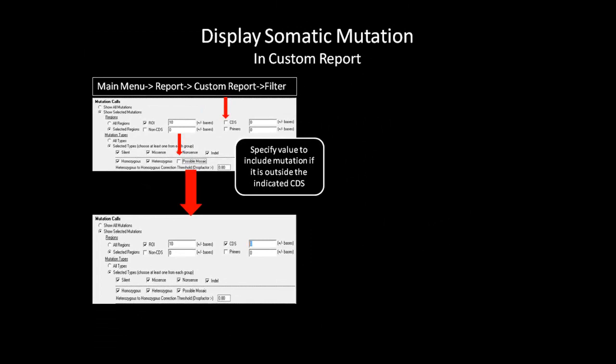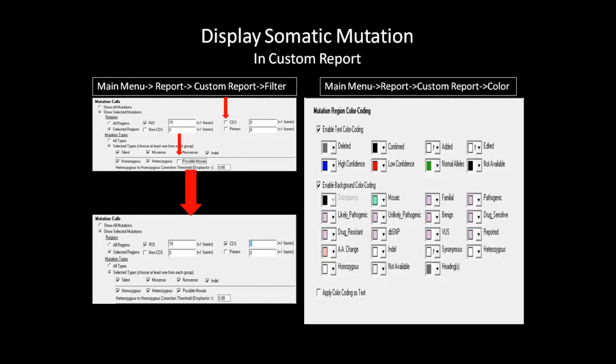After selecting these options, go to the Color tab of the Custom Report to select the color coding scheme for low frequency variants. The default color for Mosaic Mutations is teal. If you want to change it, use the drop-down menu. For more information on other features, please refer to the Custom Report webinar.